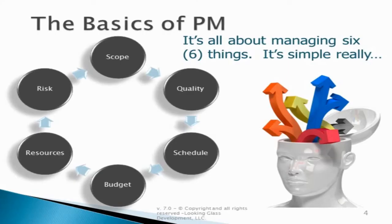As you look at it, really project management comes down to six things: the ability to manage scope, quality, schedule, budget or cost, resources, and project risk.